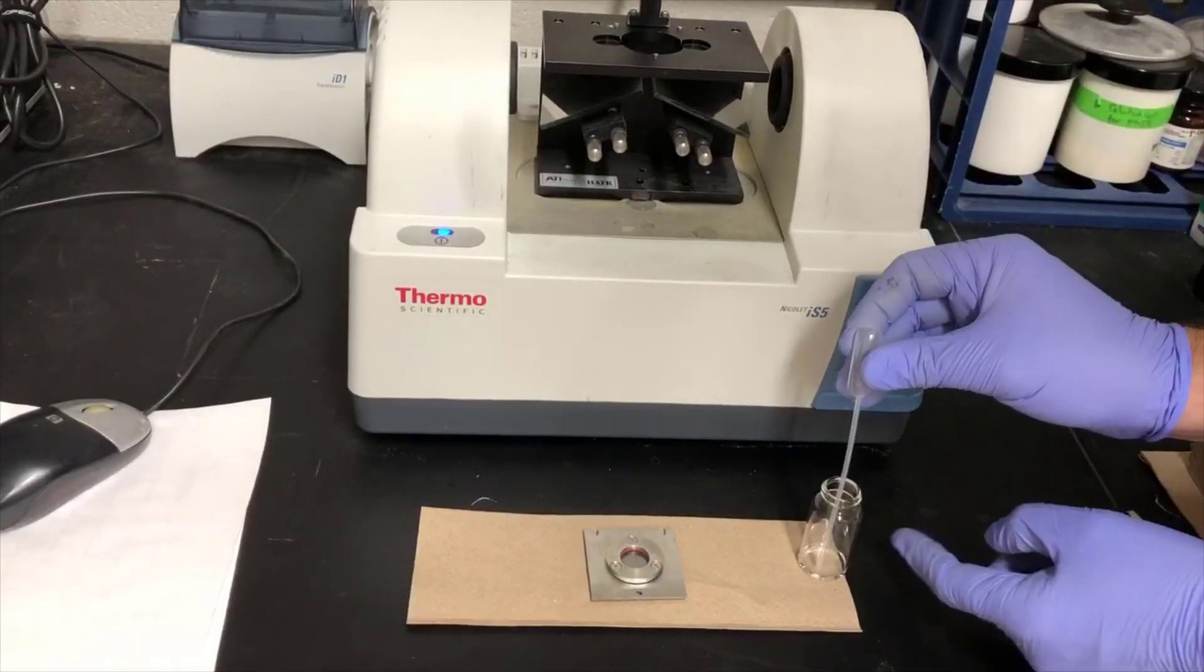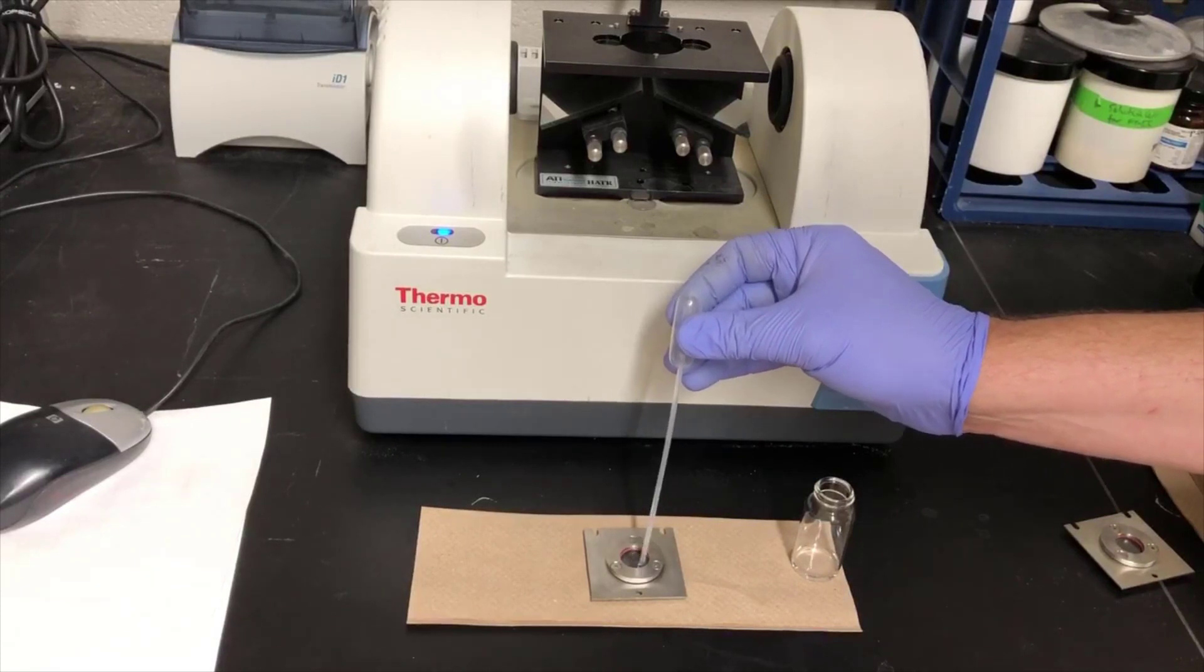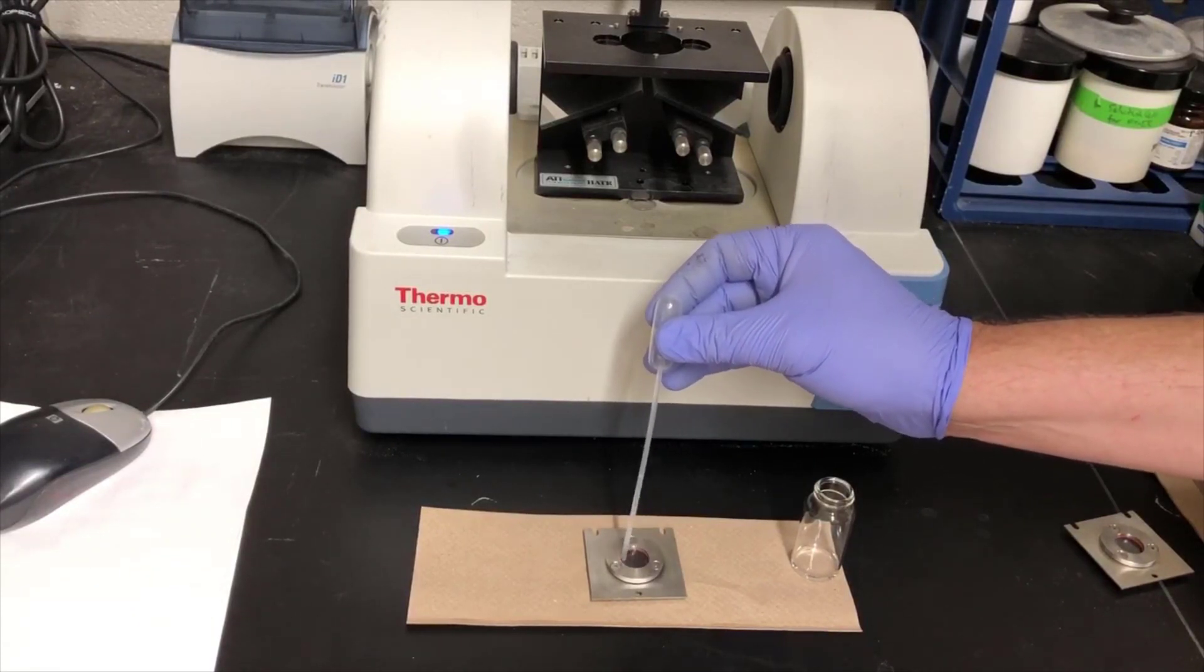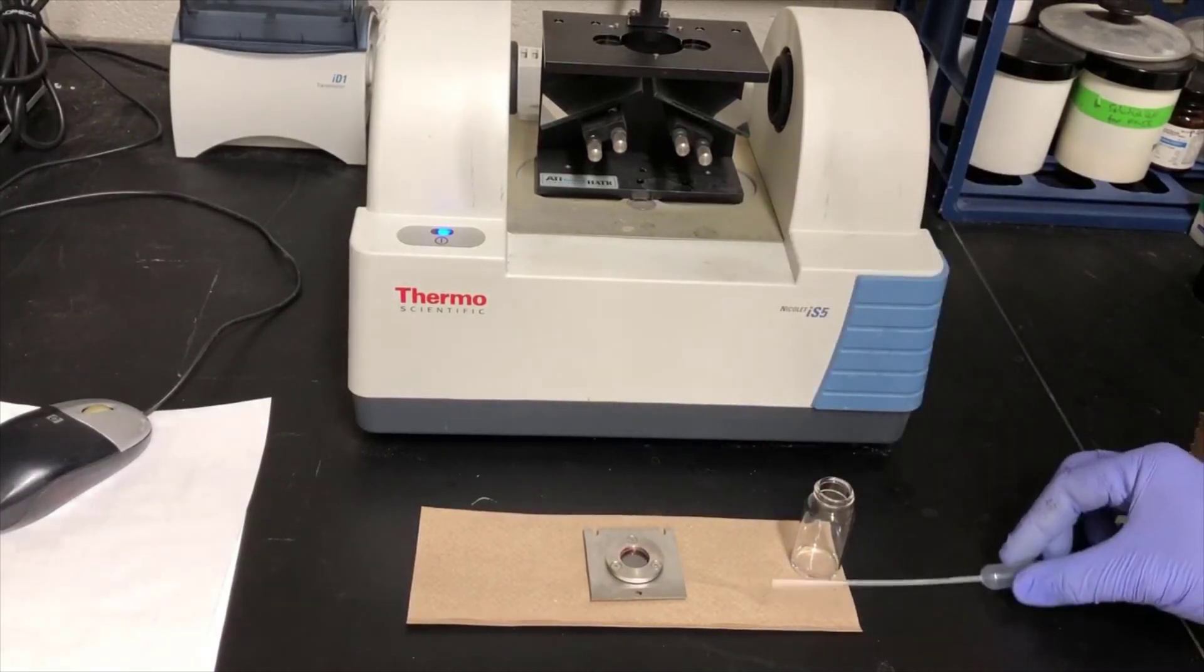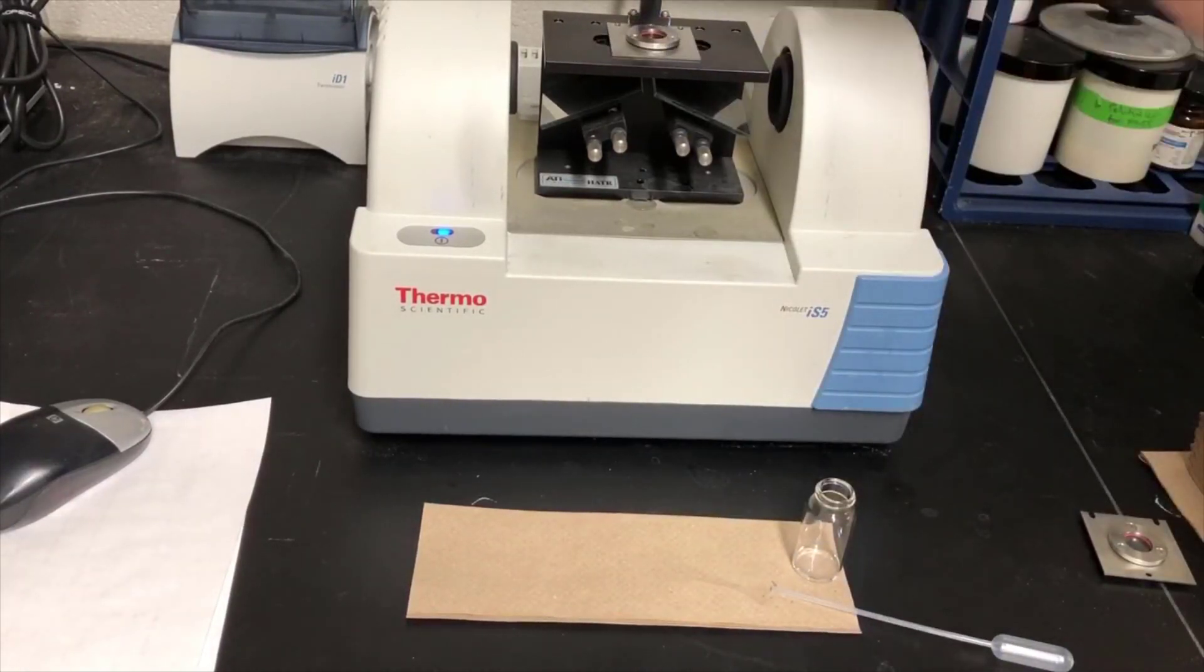Using the IR spectrometer was covered pretty extensively in another video, so you should definitely check that one out if you haven't already, or you're a little fuzzy on how to use the machine. Here I'm painting a little bit of the sample onto an ATR crystal, and I'll put that on the spectrometer and acquire scans.